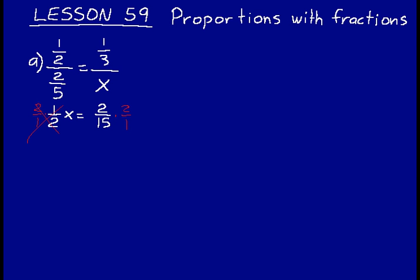That gets our x by itself. We end up with four over fifteen on the right. X equals four over fifteen.